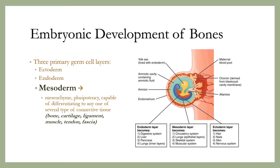The mesoderm forms mesenchyme, a diffuse cellular tissue that is pluripotent and may differentiate into many connective tissues such as bone, cartilage, ligament, muscle, tendon, and fascia.